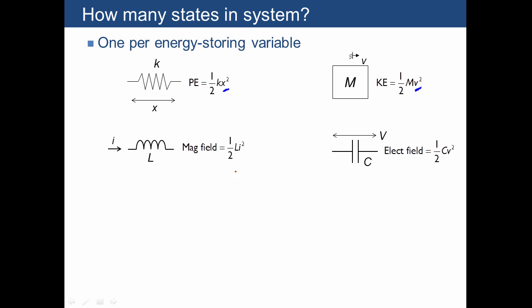For electrical systems, the magnetic field is just going to be one-half Li squared, and so i would be the energy-storing variable for that system. And for an electrical field from a capacitor, we would use v because the field's strength is one-half Cv squared.